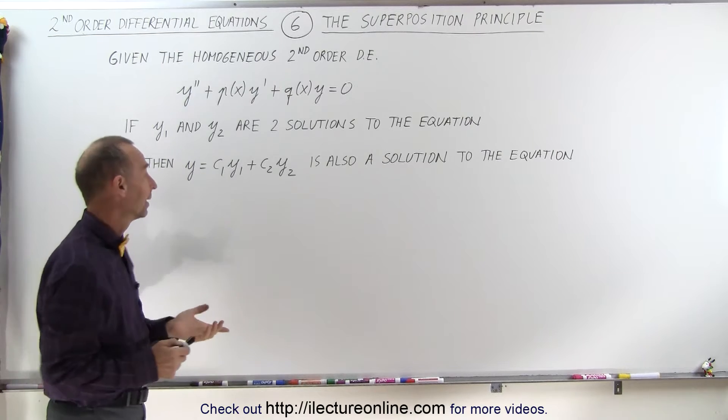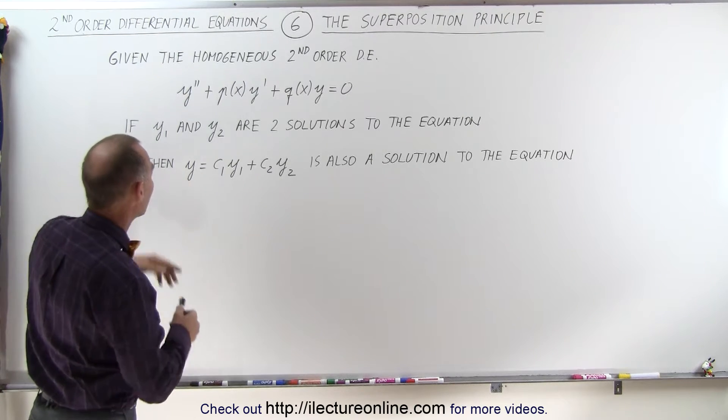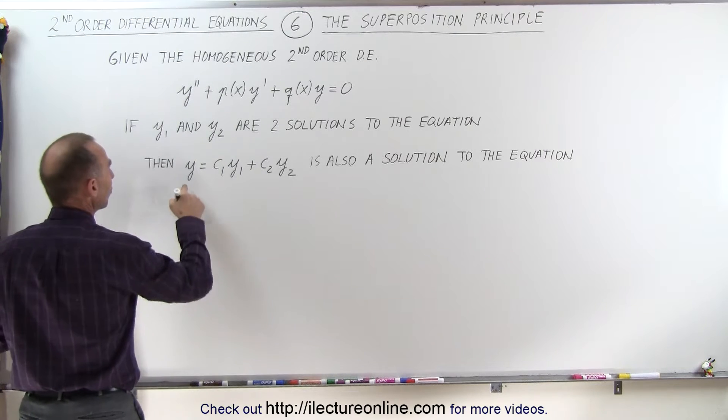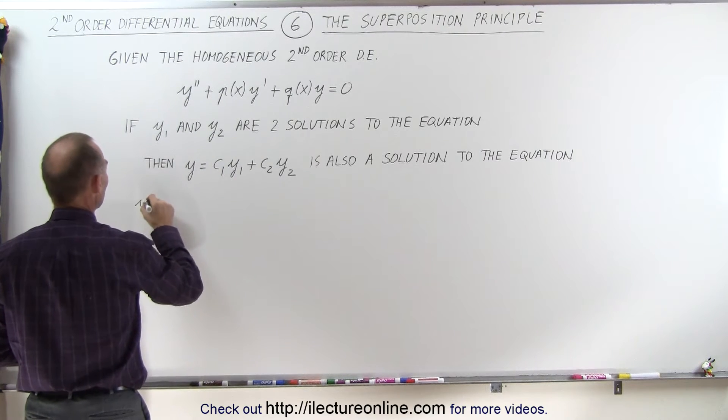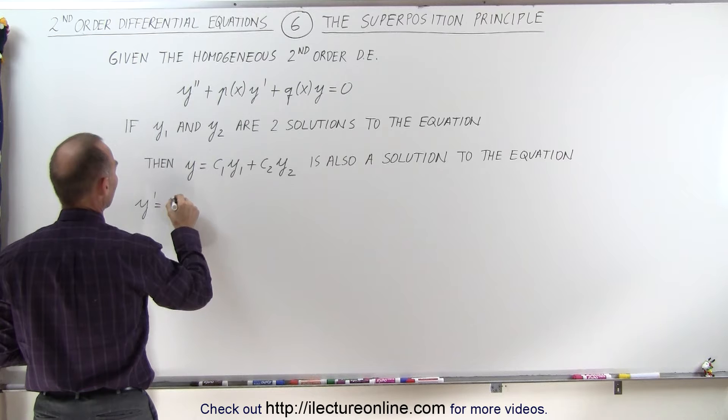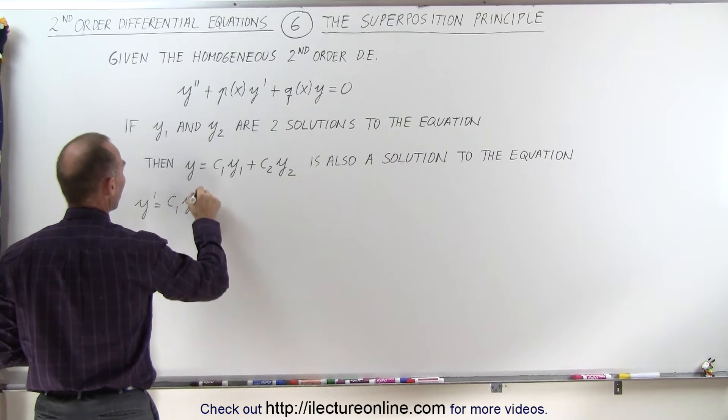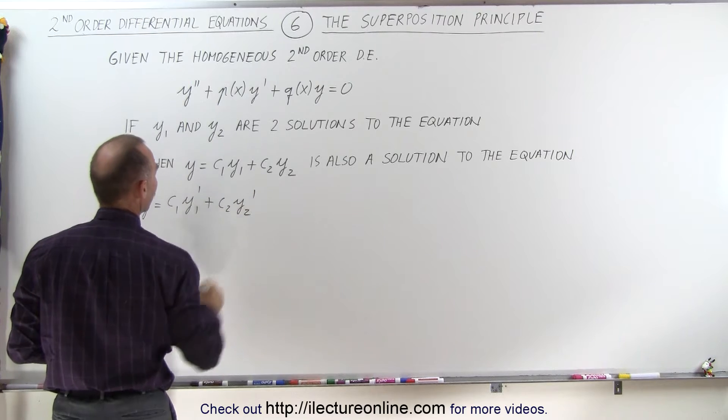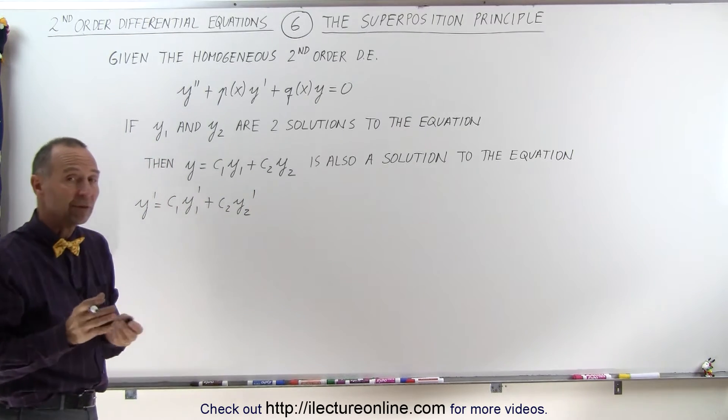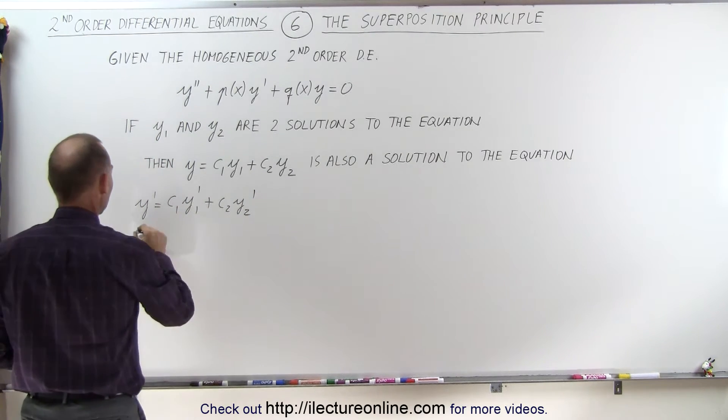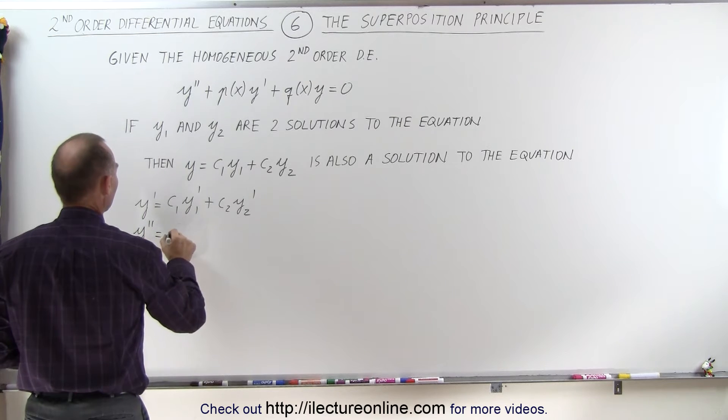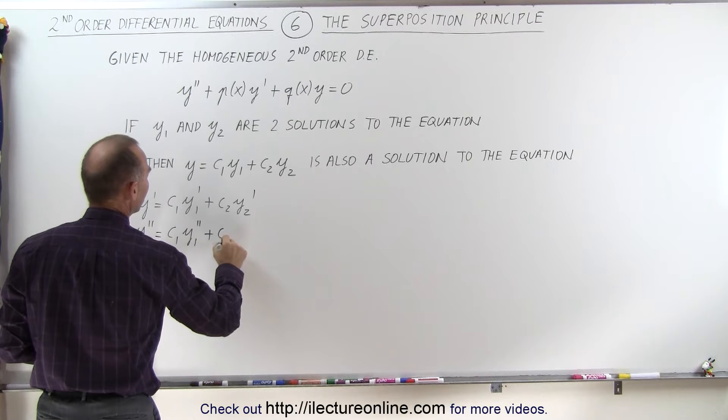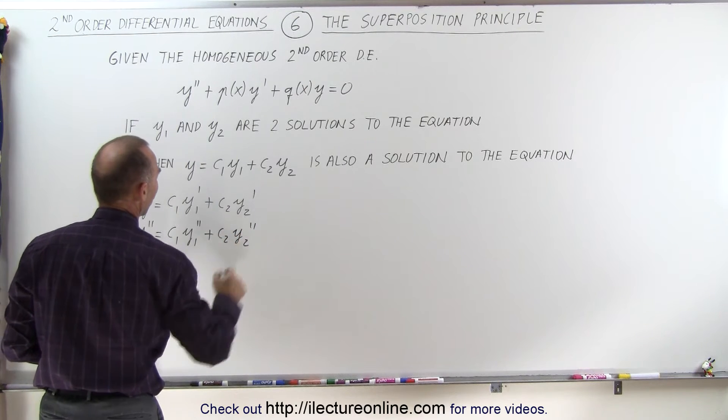We can prove that. Let's say that we assume that this is going to be the solution. Then if we take the derivative of both sides, we get y prime is equal to c1 y1 prime plus c2 times y2 prime. And then if we take the derivative of that again on both sides, we get y double prime is equal to c1 times y1 double prime plus c2 times y2 double prime.